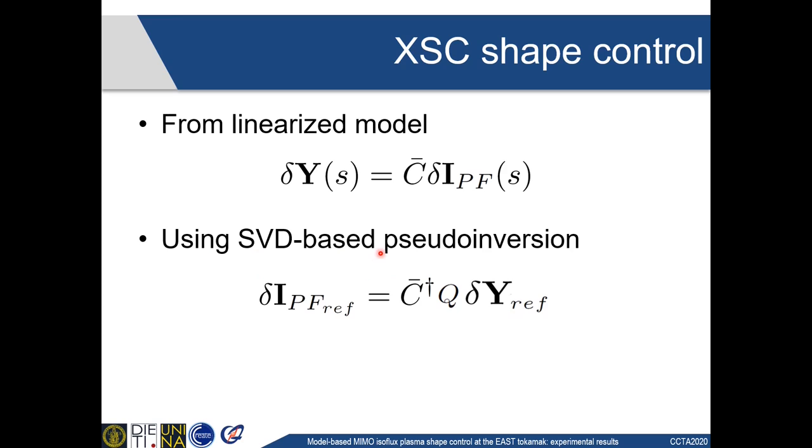The pseudo-inversion can be SVD-based, to remove the modes associated to very small singular values so that we avoid saturations in the actuators, and a weighting matrix indicated by Q here can be added to put more emphasis on some of the descriptors, since, for example, on the radial gaps where the flux gradient is higher, a small flux error may result into a large error on the actual plasma shape.